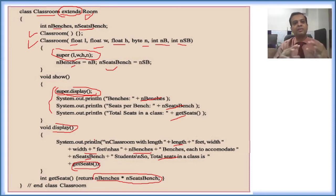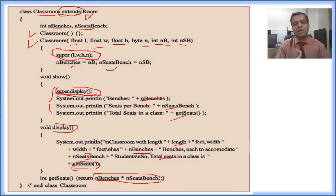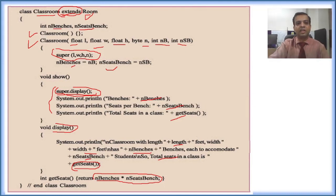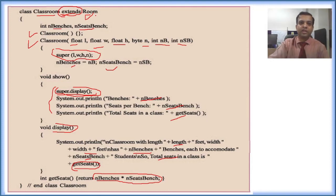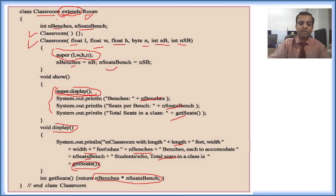Now the main function: if there is inheritance, there will be a minimum of two classes — a parent class and a child derived class. The extends keyword is used to create inheritance — the Classroom class extends the Room class. Classroom is the derived child class and Room is the parent class. Every variable and method of Room is available in Classroom unless it is private. For private members, getter and setter methods are needed.